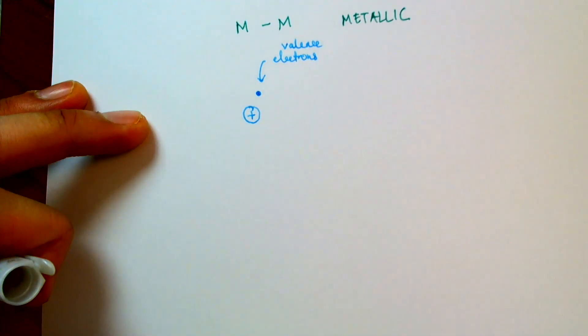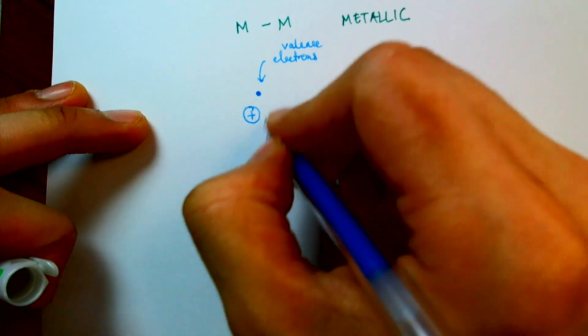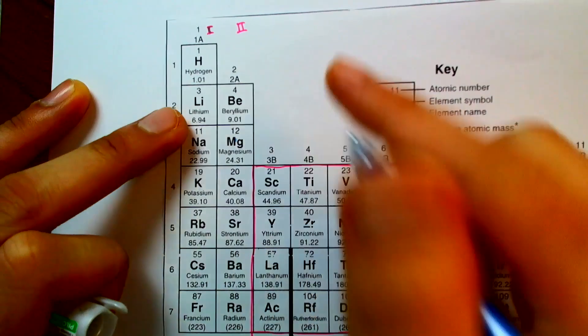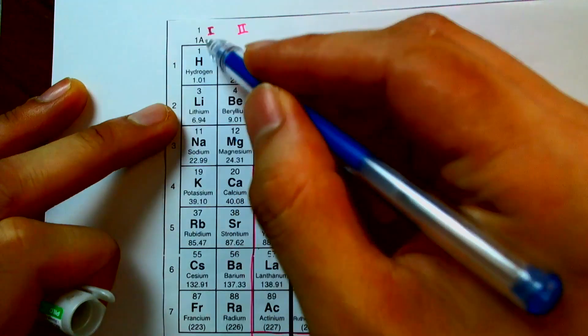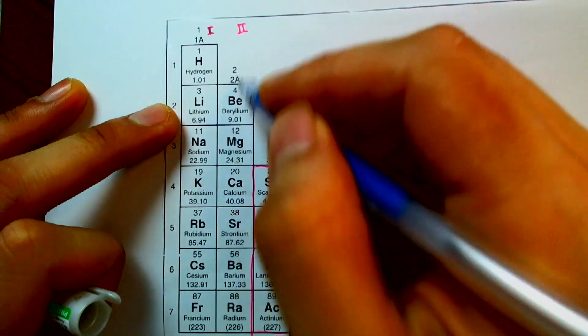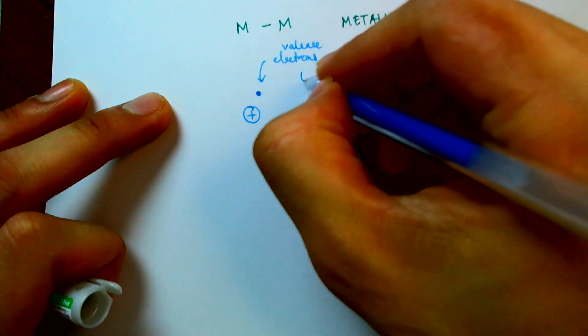So the metals tend to have either 1, 2, or 3 electrons in their valence shell. As an example, we can see metals in group 1 have 1 electron in their valence shell. Metals in group 2 have 2 electrons in their valence shell. Now this valence electron is free to move.